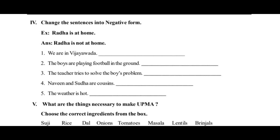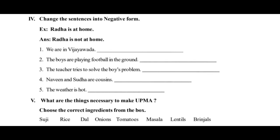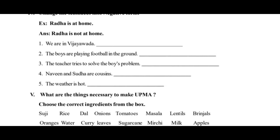Exercise number four: Change the sentences into negative form. To make a negative, we add 'not' after the verb. For example: 'Radha is at home' is a positive sentence. Its negative form is 'Radha is not at home' — because 'not' is added after the verb 'is.' Now complete the exercise below.